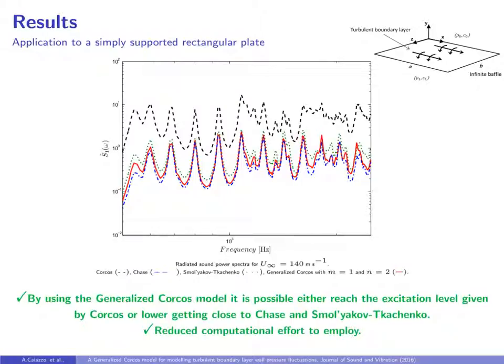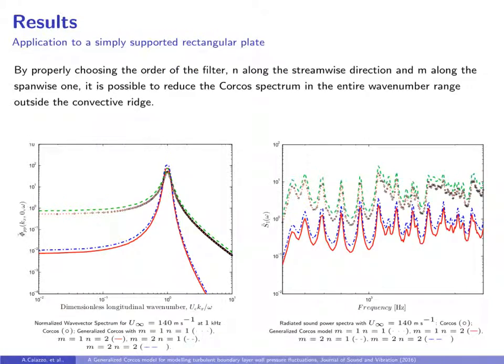At the same time, having a separable model, the computational effort is greatly reduced. By properly choosing the order of the filters, it's possible to reduce the Corcos spectrum in the entire wave number range outside the convective ridge, as shown in the left plot. This behavior is reflected on the sound power radiated by the plate, shown in the right plot.